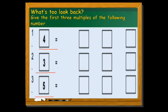So how do we find the multiples of those numbers? We will just add the given numbers by themselves. For example, number 1, we have 4. So 4 plus 4 becomes 8, plus 4 becomes 12, and plus 4 becomes 16. So 8, 12, and 16 are the first 3 multiples of number 4.